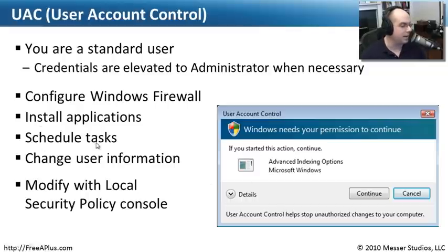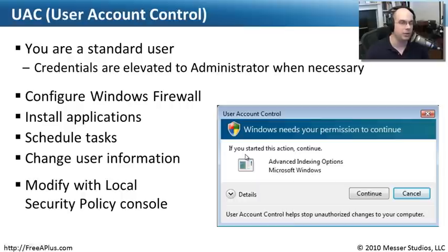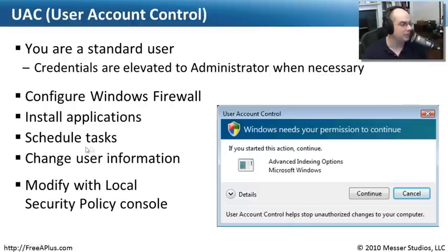Actions like installing applications, scheduling tasks, or changing user information can only be done if you've given permission via UAC. You can change some of those settings — maybe you don't want to be prompted every time somebody tries to schedule a task. You can go into your local security policy console and modify that specific function so that it will never prompt you again via UAC.